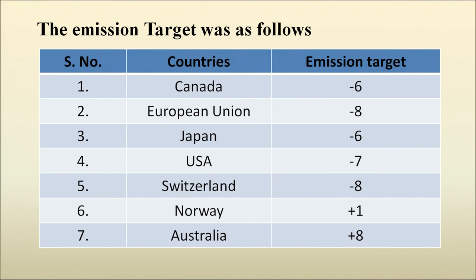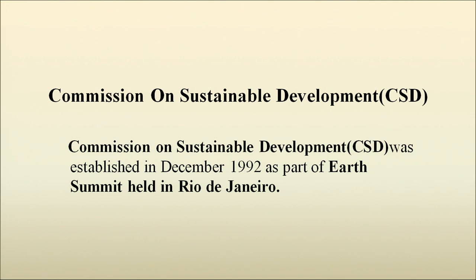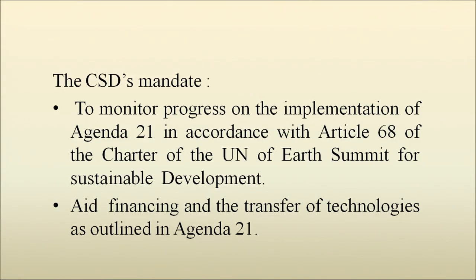The emission targets of different countries are shown in this table. For example, Canada had to decrease greenhouse gas emissions by 6%, the European Union by 8%, Switzerland by 8%, while Norway was allowed plus 1% as a carbon-free country, and Australia plus 8%. As per the Kyoto Protocol, industrialized countries had to reduce greenhouse gas emissions by 5.2% of their 1990 level by the end of the first commitment period, 2008–2012, whereas developing countries such as India and China were exempted from emission targets. The Commission on Sustainable Development was established in December 1992 as part of the Earth Summit, with a mandate to monitor progress on the implementation of Agenda 21 in accordance with the Charter of the UN, and to aid financing and transfer of technologies.